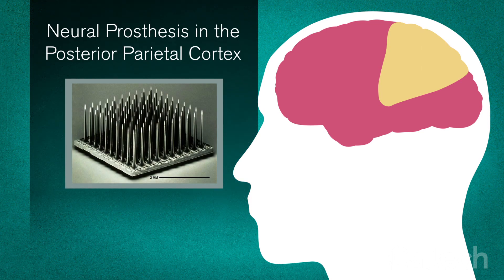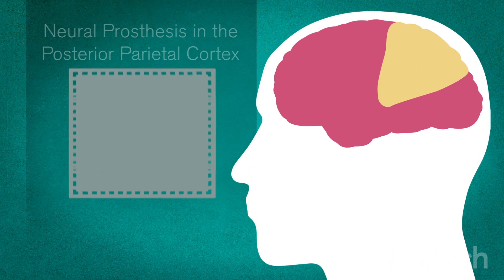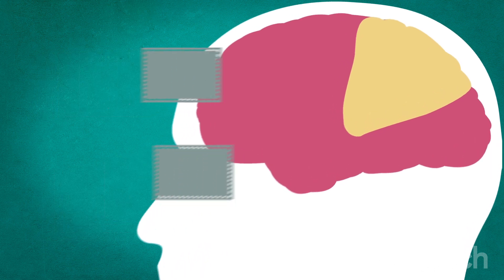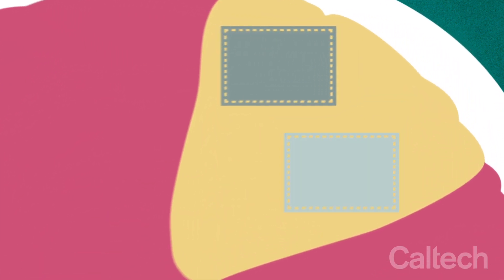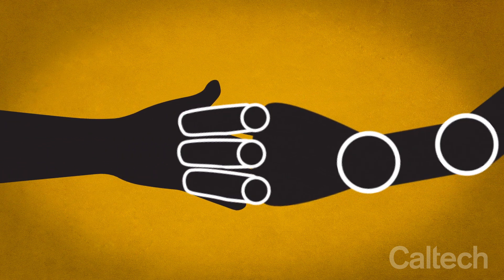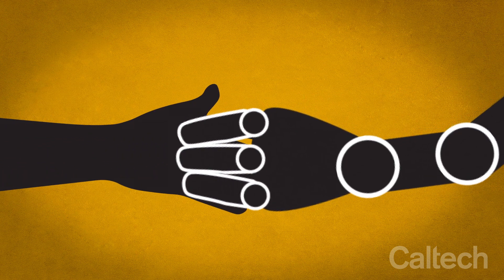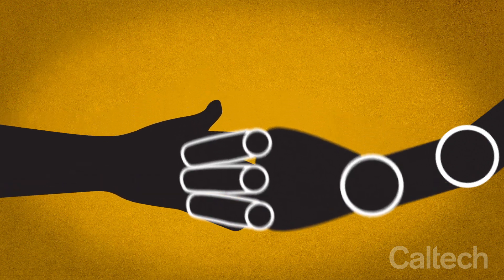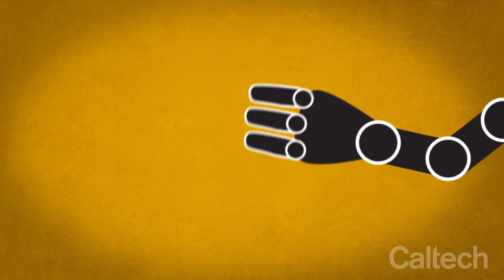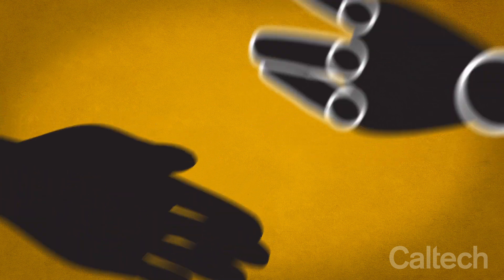First, they implanted a neuroprosthesis in the PPC of a paralyzed patient. Then they asked him to visualize specific actions. His neurons fired, sending instructions to the robotic arm. Using only his thoughts, he was able to guide the arm to shake hands and even play rock-paper-scissors using swift, fluid motions.